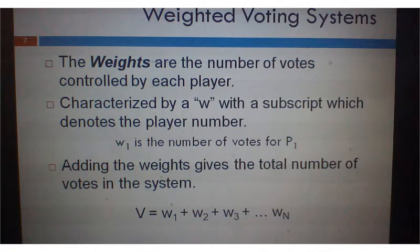The weights are the number of votes controlled by each player. So if my weight is 3, that means I have 3 votes. And we're going to just use a w, a lowercase w, to denote this. So w sub 1 is the number of votes for player 1.